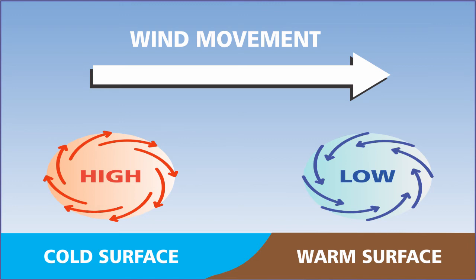If the water is particularly cold and the land warms up very quickly, the intensity of both systems becomes extreme — a very high pressure over the ocean and a very low pressure over land. Since wind flows from high to low pressure, and there's a big difference between them, the pressure gradient is quite steep, wind movement is much faster, and you experience gale force winds at the coast.